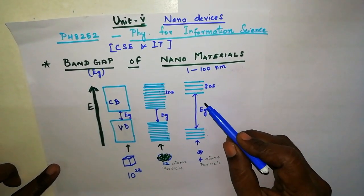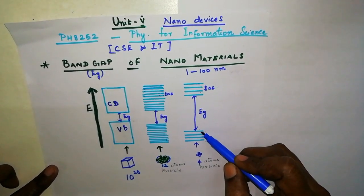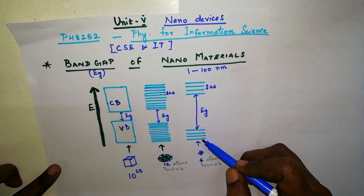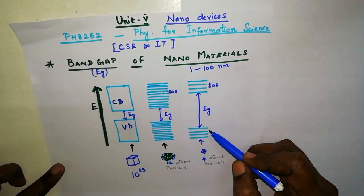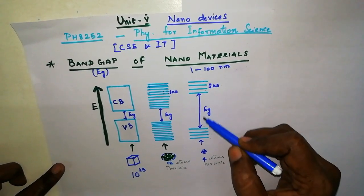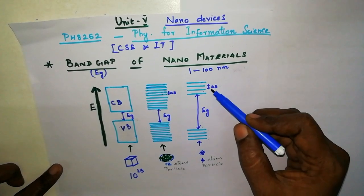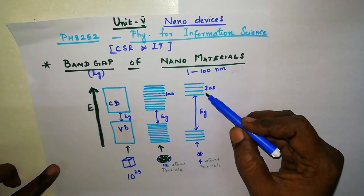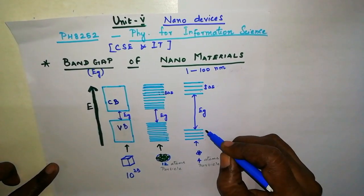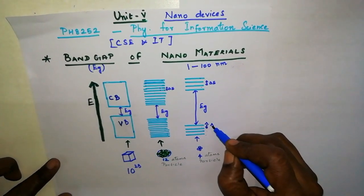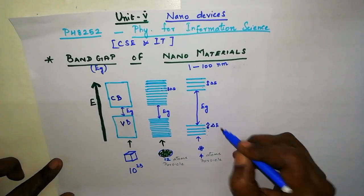Now, when the particle is further reduced, so that the particle has only 4 atoms in it, the removal of atoms adjusts the boundaries of the band gap and the subshells split. Also, we can see that the spacing between the subshells increases.